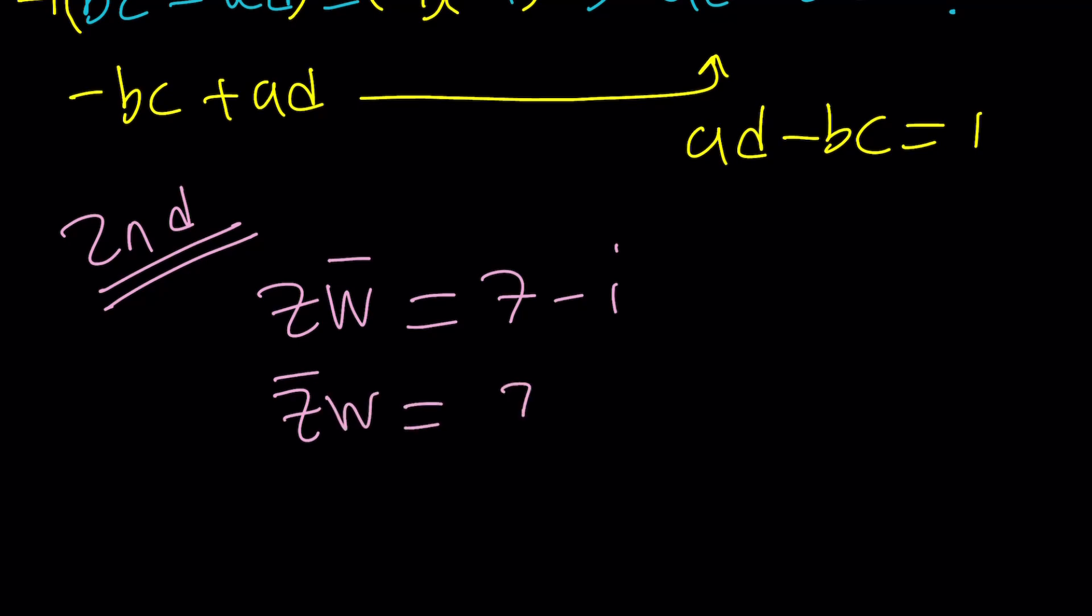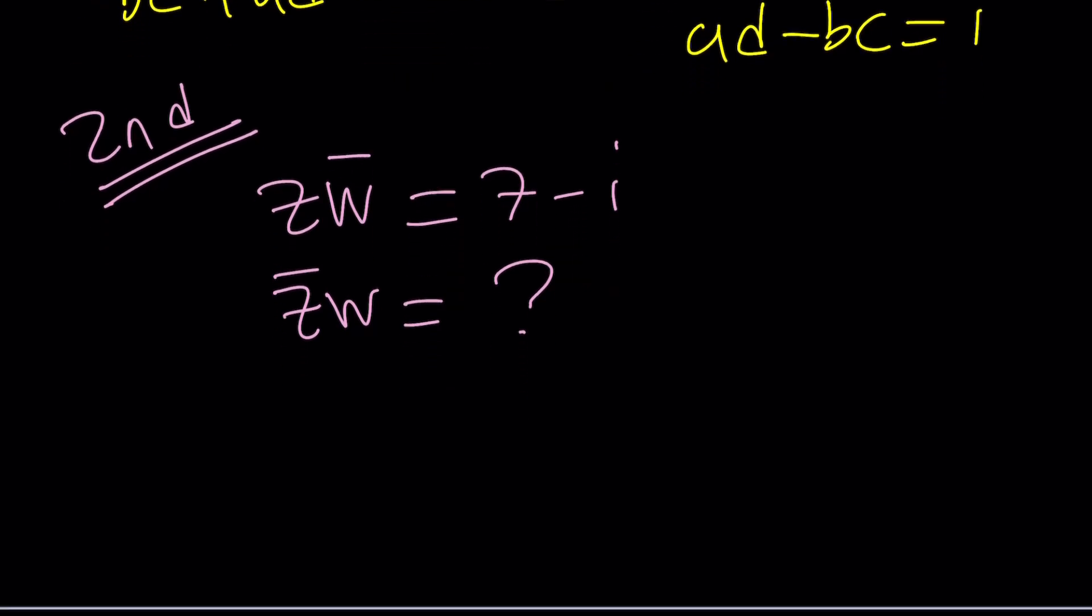We are given Z times W bar equals 7 minus i, and we're supposed to find Z bar times W. There's a couple of different ways you can do this. Let me tell you, if you have a complex number, you can basically conjugate both sides, or if you have an equation. So what happens if you conjugate both sides?